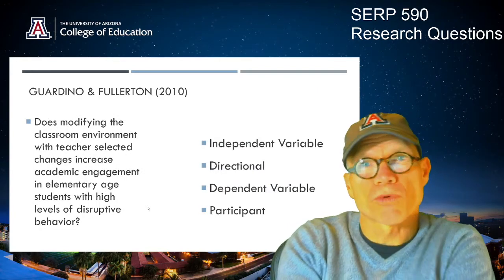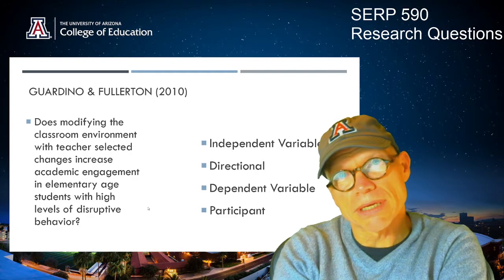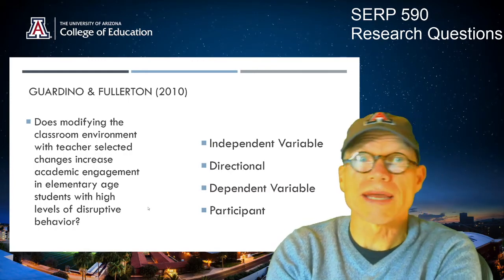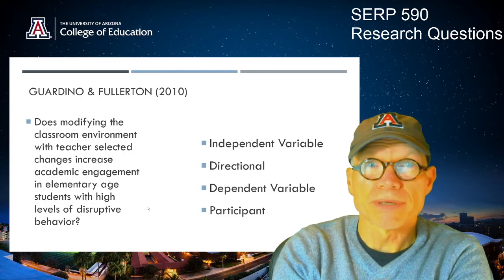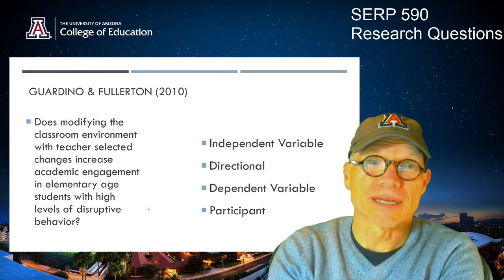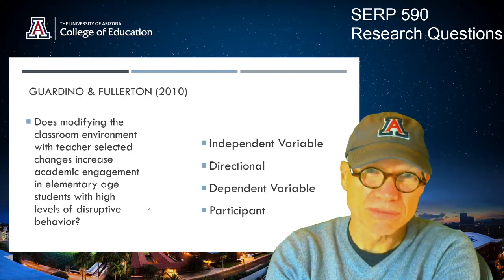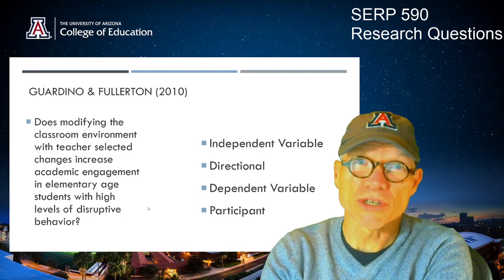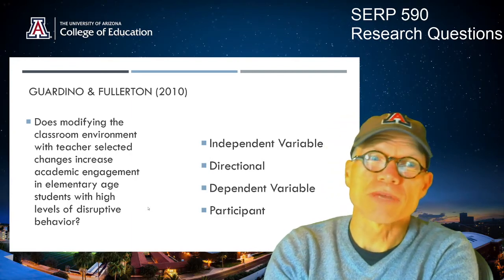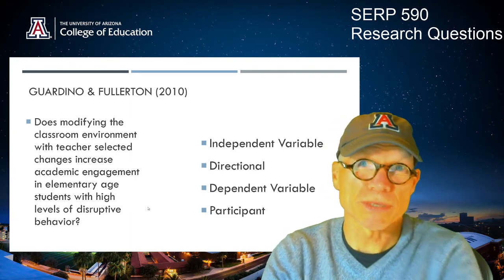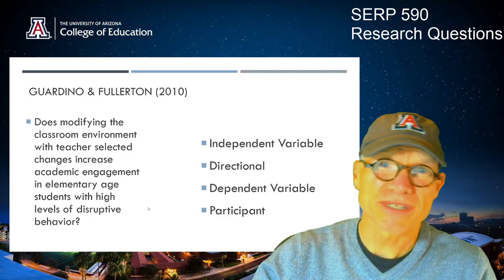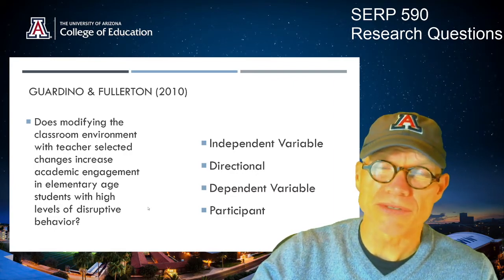There are four broad parts — you can read in your text and they'll offer you some variation on this, and I think that's a good thing. You should hear more than one way for this to be explained. But my simple way of putting it is that a single case research question has an independent variable, it's directional, it has a dependent variable which is a human behavior usually, and it has a participant description. It's just like a simple recipe.